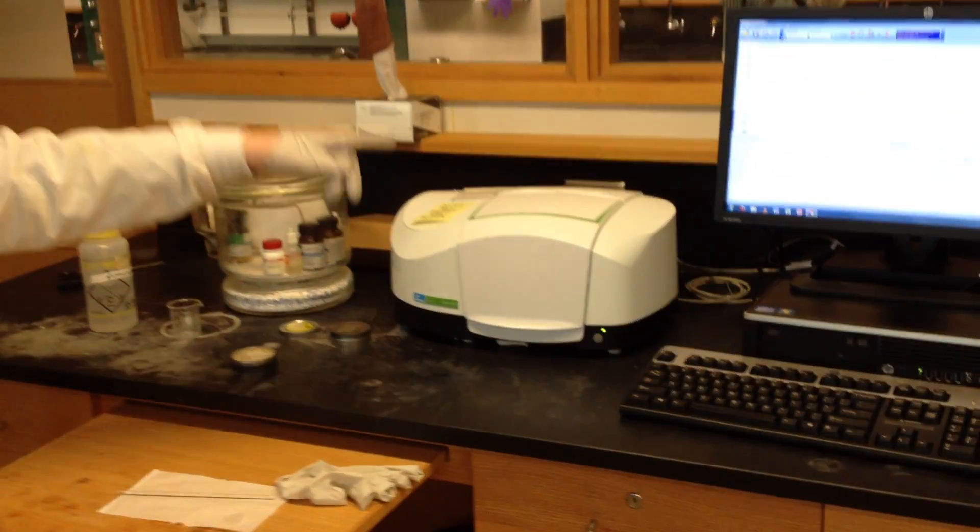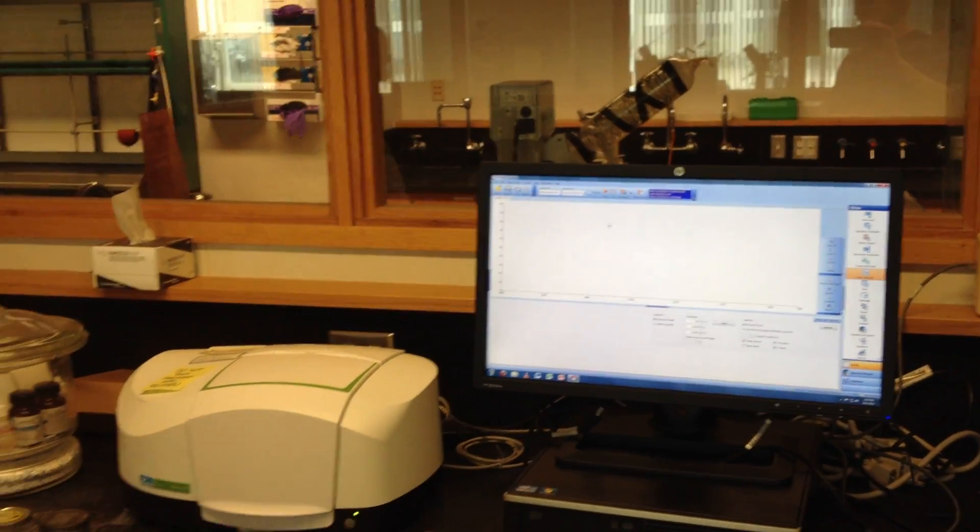Infrared is a methodology to start, or at least sometimes completely, but at least start figuring out the structure of a compound. The infrared spectrometer is right over here. This is the spectrometer, and this is the computer that has the software that runs the spectrometer.